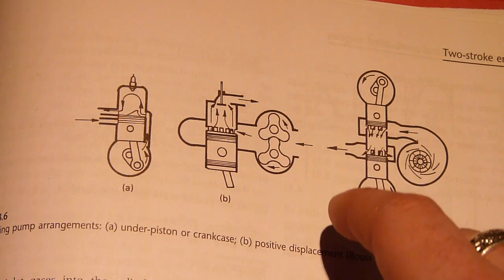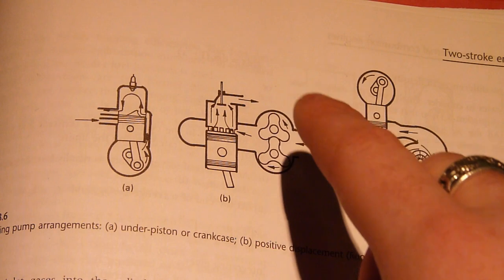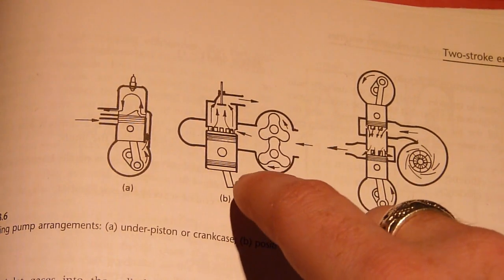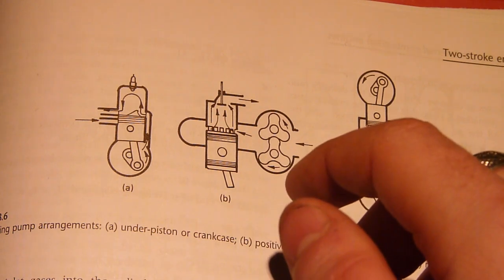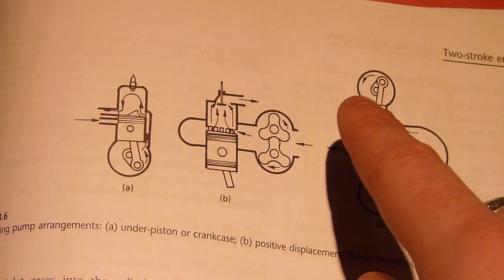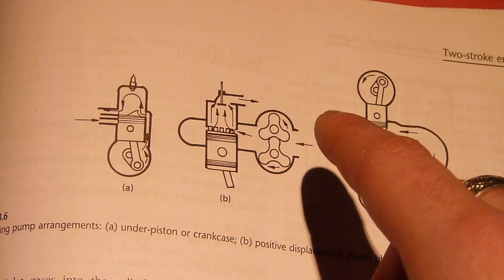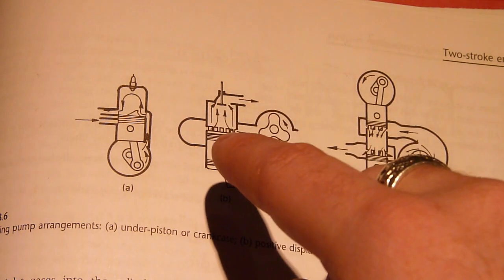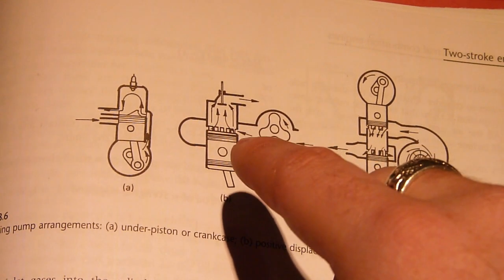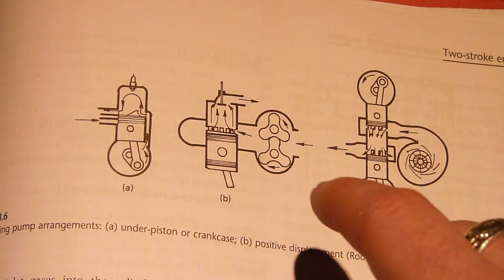But the reason why this is done is because they don't use the crankcase itself as the compressor, so they actually do need an external method of upping the scavenging pressure to force the fuel-air mixture into the cylinder and also to push the exhaust gases out.